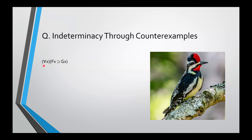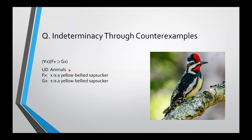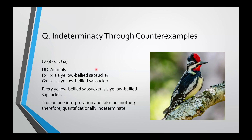We'll do that for this sentence — we've already given one where it was false, so now we'll give one where it's true. The universe of discourse will be animals. Fx will be 'x is a yellow-bellied sapsucker,' and Gx will also be 'x is a yellow-bellied sapsucker,' because nothing says two predicate letters can't refer to the same thing. Then this sentence means every yellow-bellied sapsucker is a yellow-bellied sapsucker, which is obviously true. So the sentence is true on one interpretation and false on another, and therefore quantificationally indeterminate.